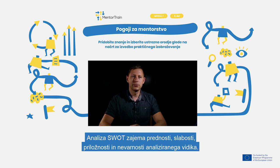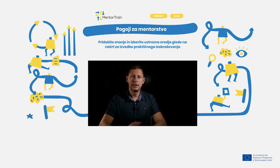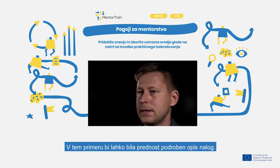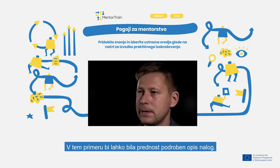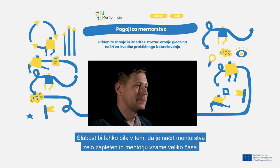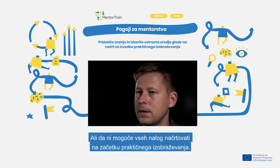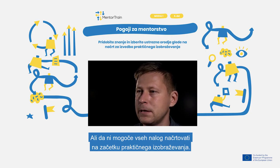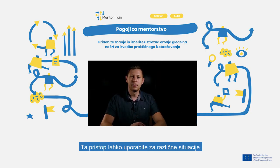In this example, strengths could be a detailed description of tasks. One example of a weakness could be that the mentoring plan is very complex and takes a lot of time for the mentor, or that it's not possible to plan all the tasks at the beginning of the apprenticeship. You can use this approach for different situations.